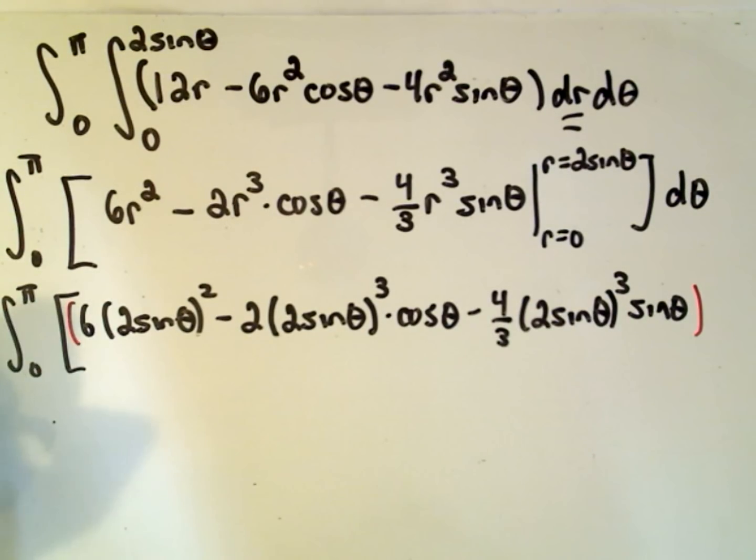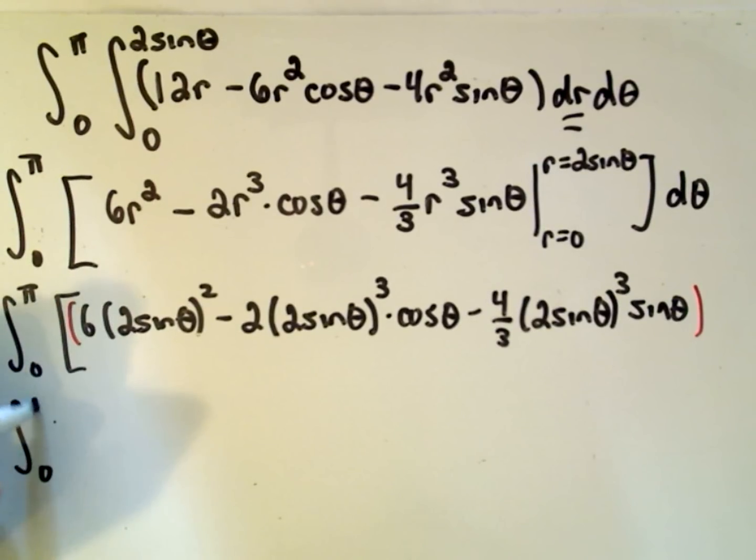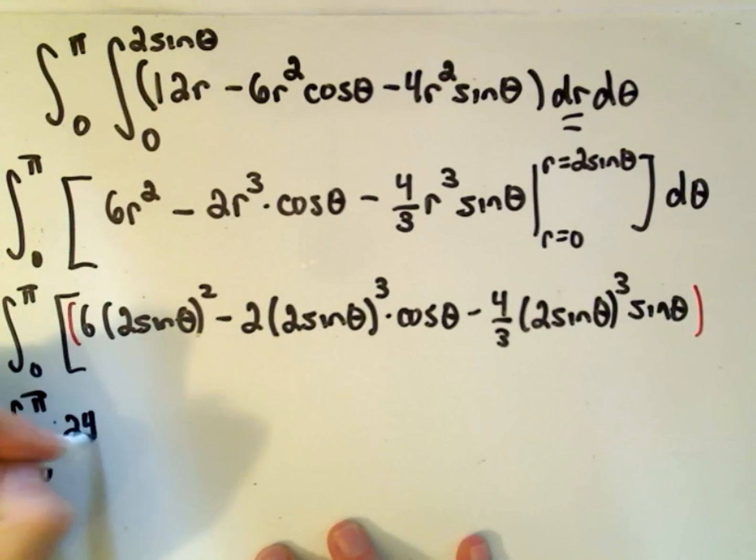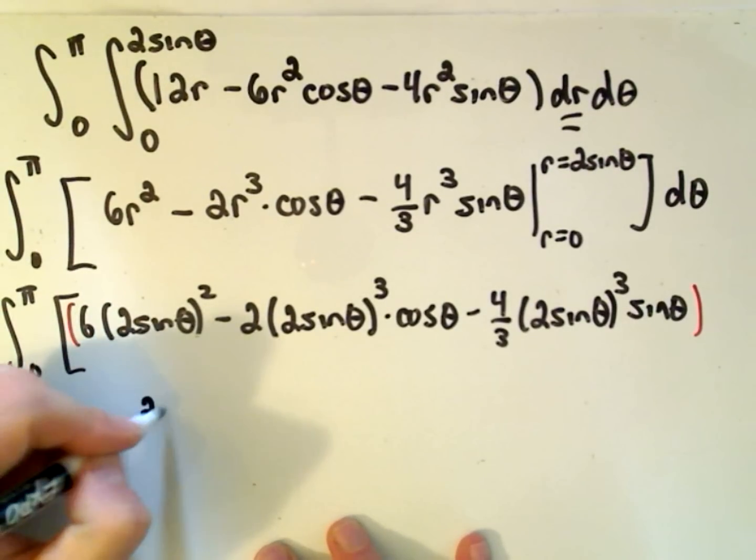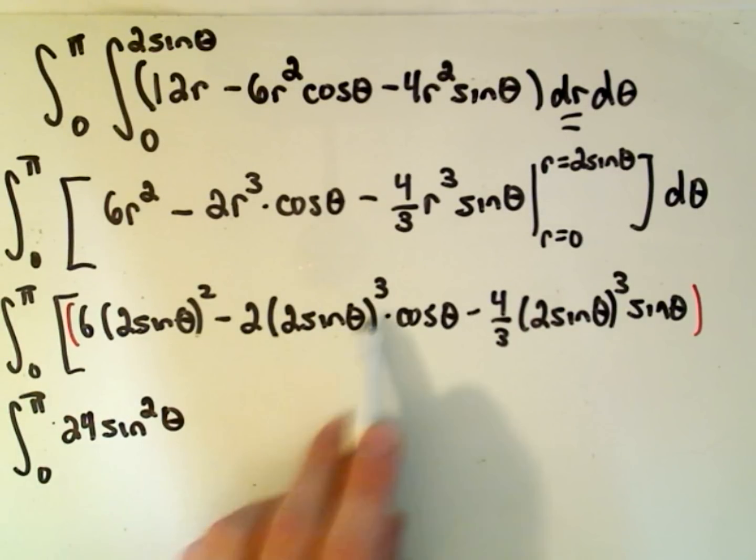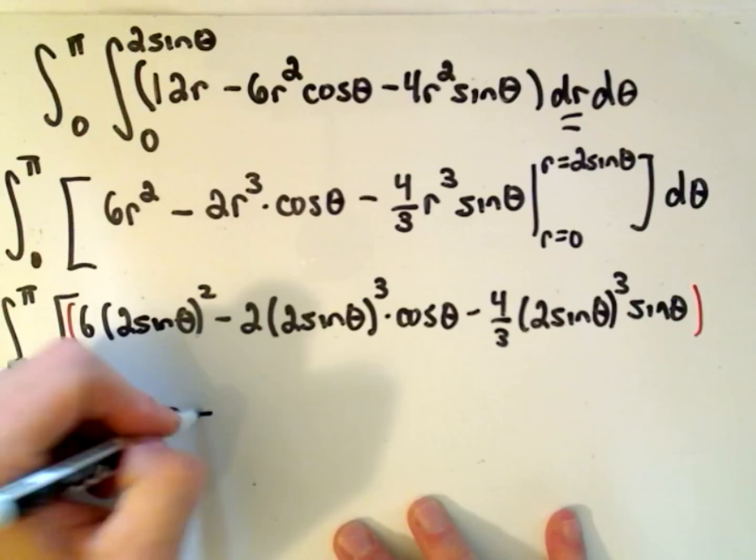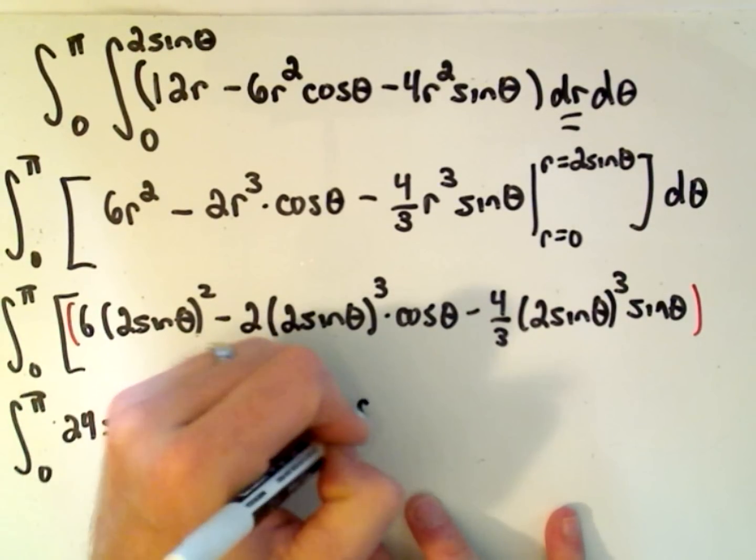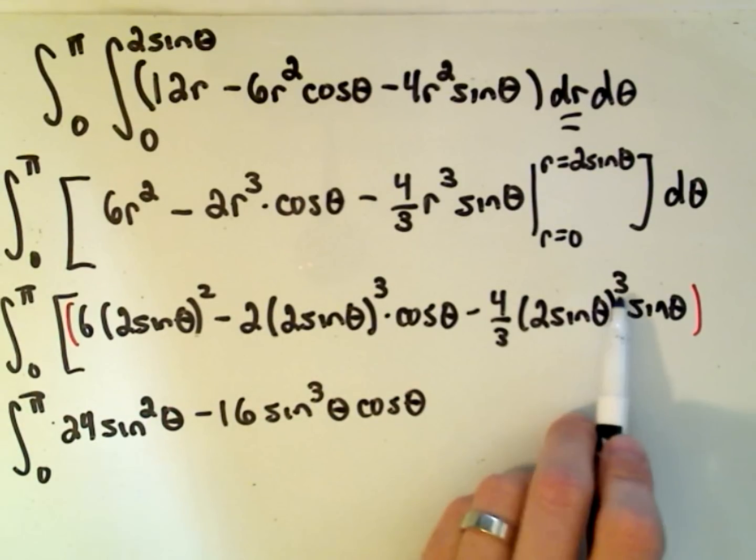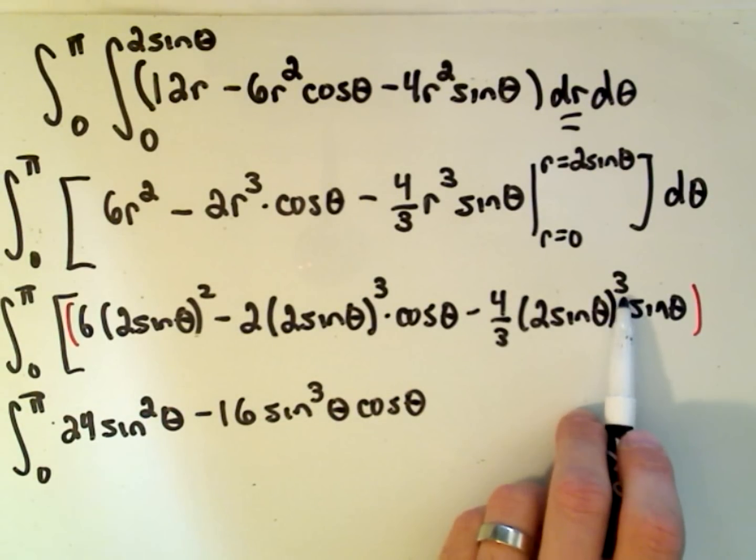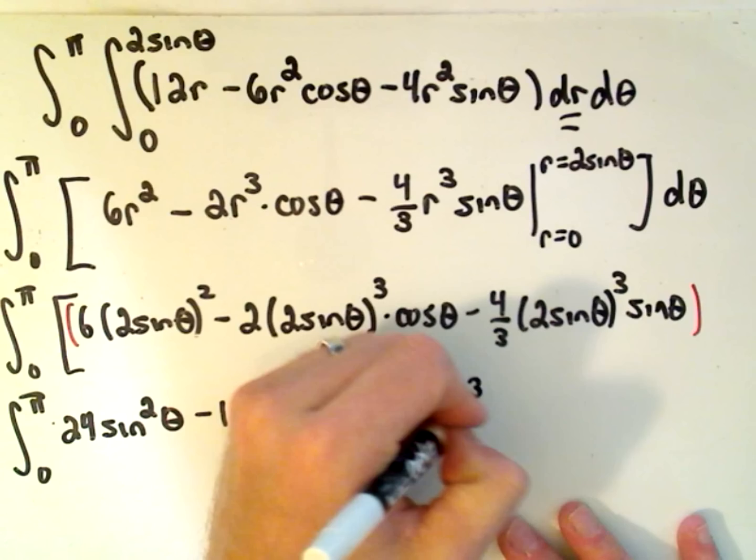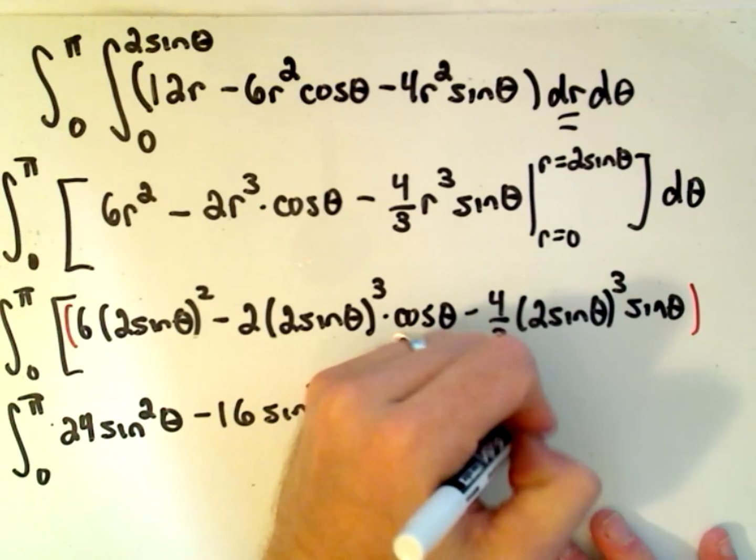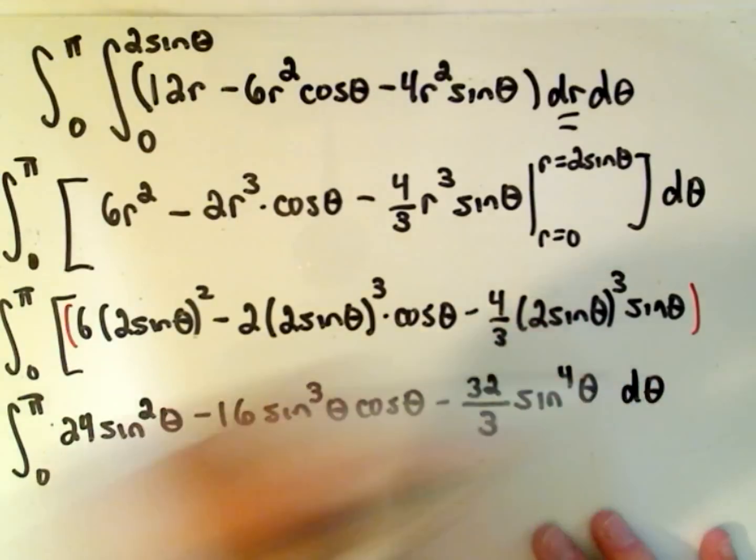All right, so let's clean this up here a little bit. So this is from 0 to π. Okay, so 2² is 4 times 6 is 24sin²θ. So I'm going to have 2³, which is 8, times another 2 is minus 16sin³θcosθ. And then I'm going to have 2³, which is 8, 8 and 4 is 32 over 3, so minus 32/3. It looks like we have sin³ times another sine, so that'll give us sin⁴θ dθ.